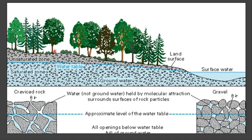This slide shows how the water goes inside. This is the water table, unsaturated zone, this is saturated zone. This is the ground water and here is the lakes or streams and this is surface water. This is land surface and the water which is not ground water is held by molecular attraction surrounding surface of the rock particles. This is the rock particles and the water is inside these rocks. This is the approximate level of water table.